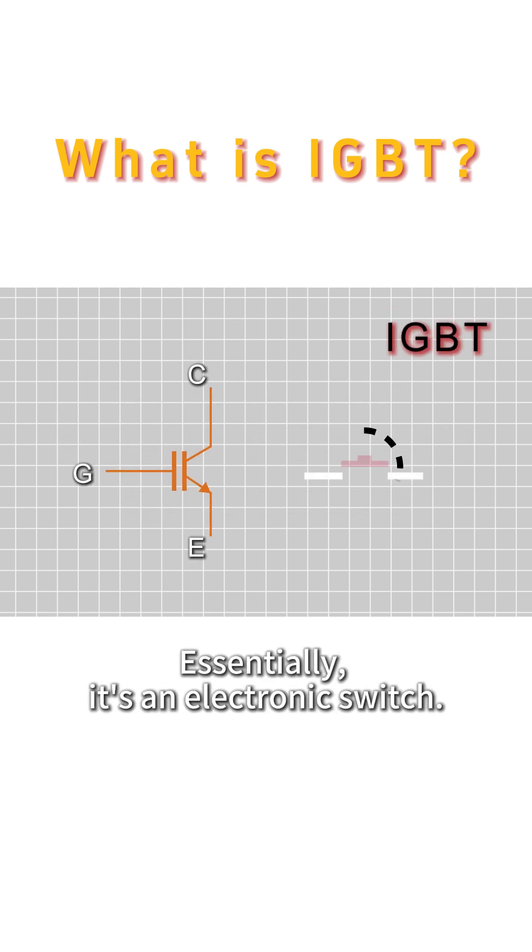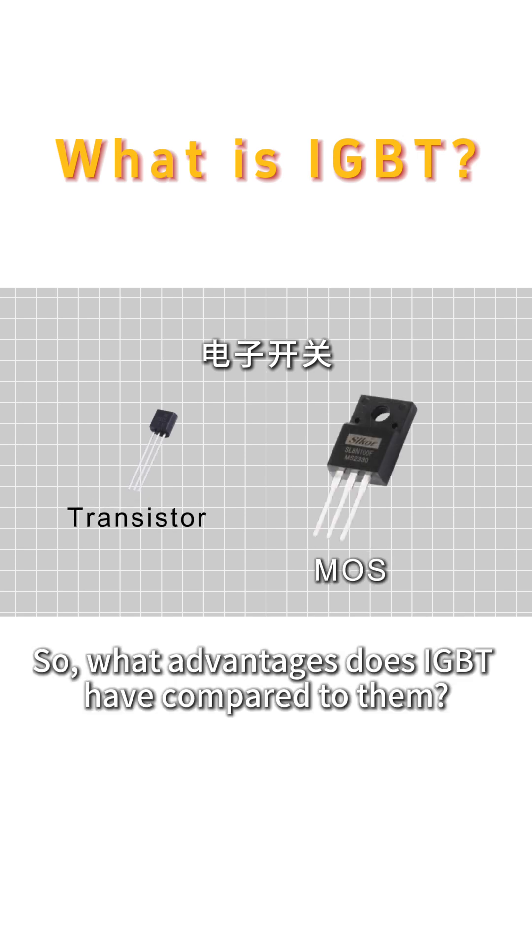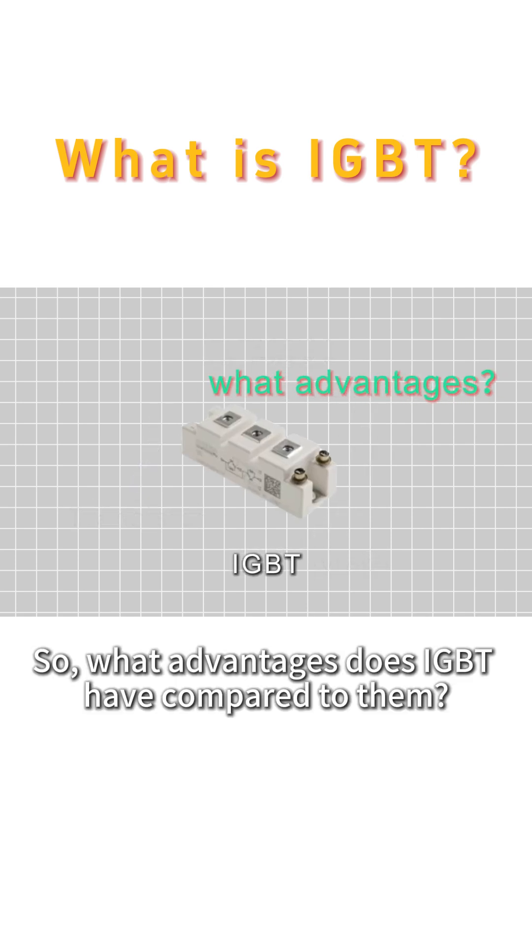Essentially, it's an electronic switch. When it comes to electronic switches, you might think of MOSFETs and transistors. So, what advantages does IGBT have compared to them?